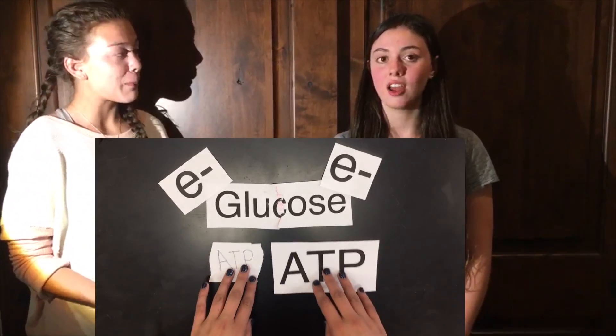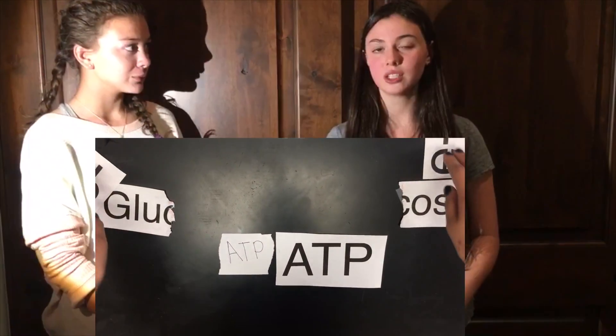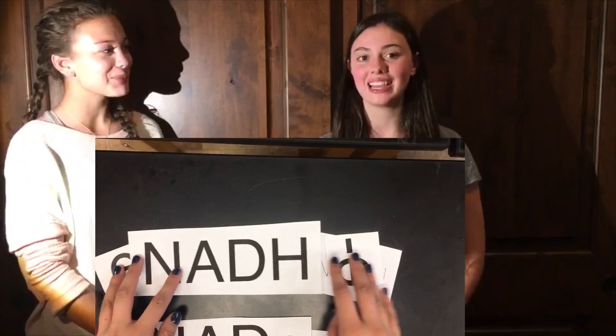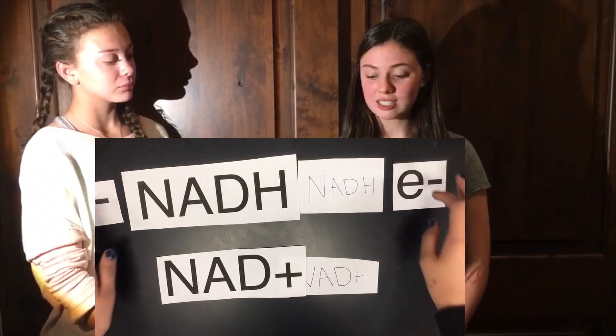In glycolysis, oxygen and glucose enter the cytoplasm. Then two molecules of ATP are invested to energize and split glucose. Two electrons leave glucose and are accepted by NAD positive, making NADH carriers. The phosphates that were added are then removed and this energy is used to make four ATPs. The reactions produce two pyruvates that are two three-carbon molecules.